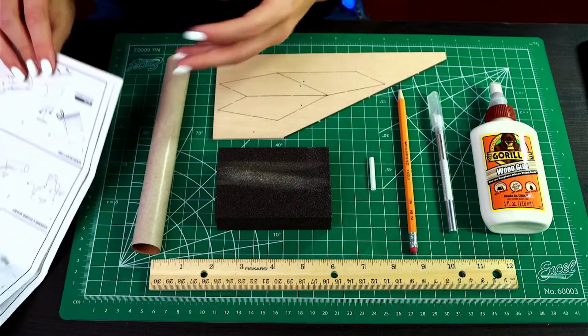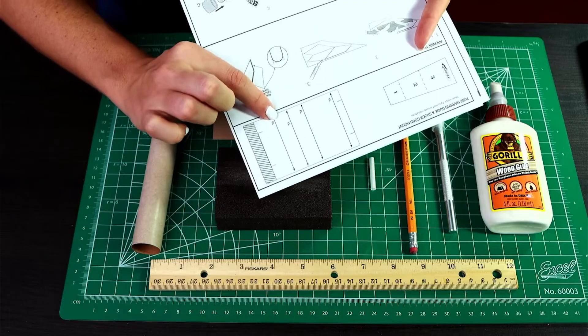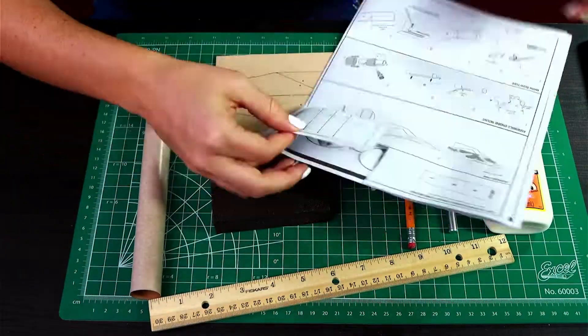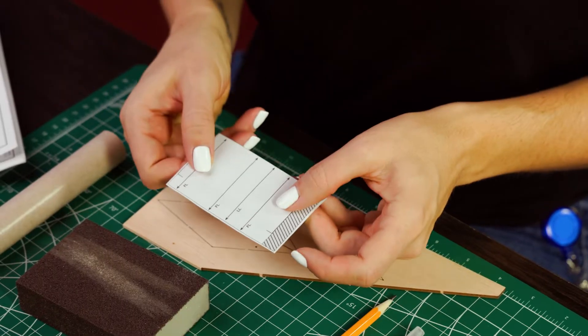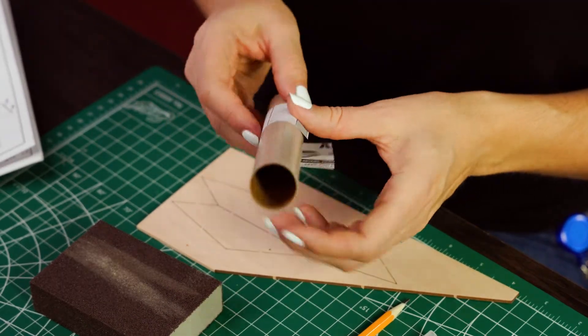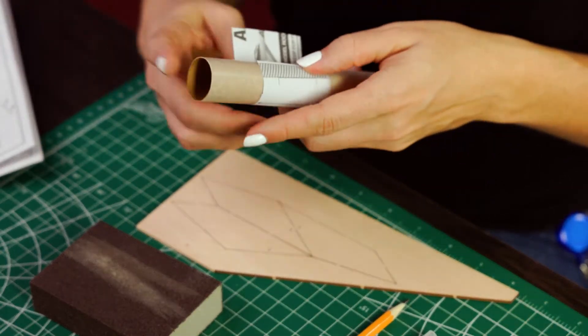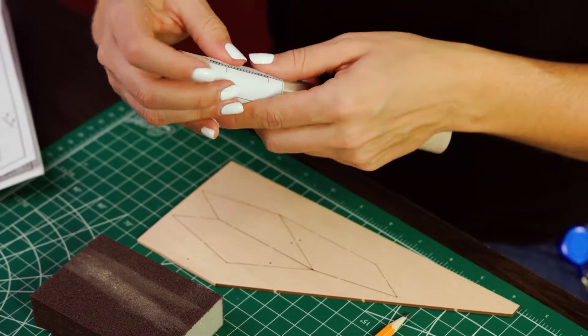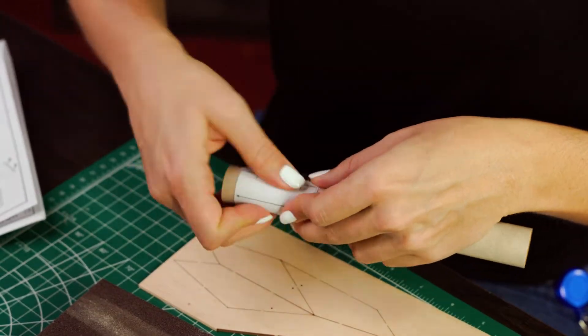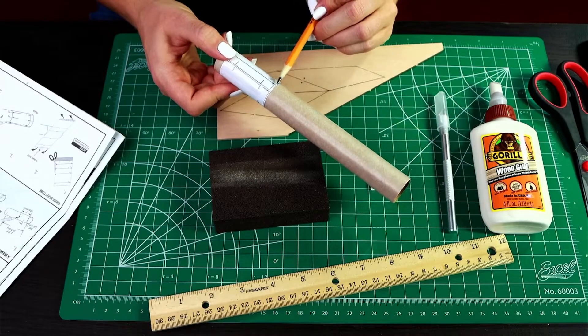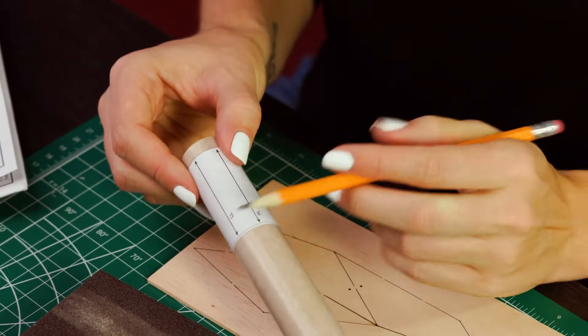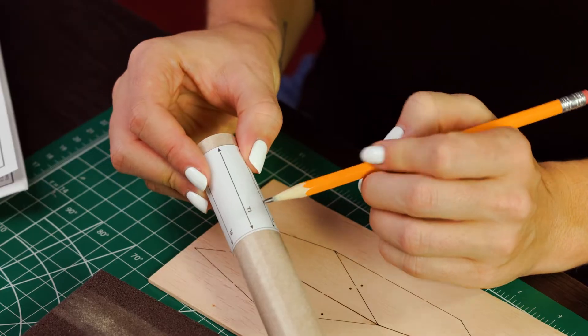First thing for marking the body tube, you're going to need to cut out this fin alignment guide from your instructions. Take your fin alignment guide and wrap it around your body tube and attach it with some clear tape. Make sure it's really tight around there and that it is evenly lined up. Then we're going to use this to make marks on the body tube for our fin lines. You can see FL is for the fins and then LL is for the launch lug.